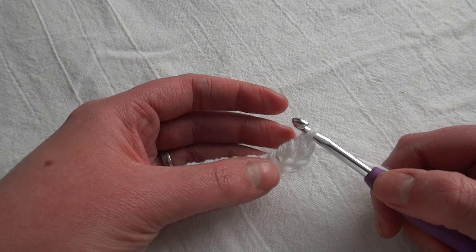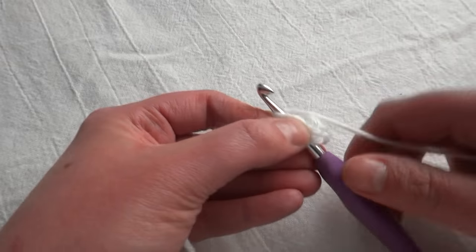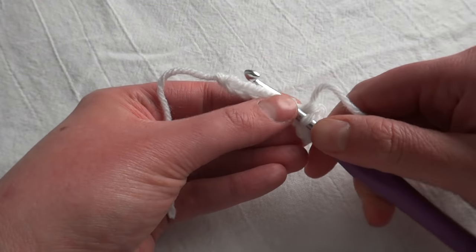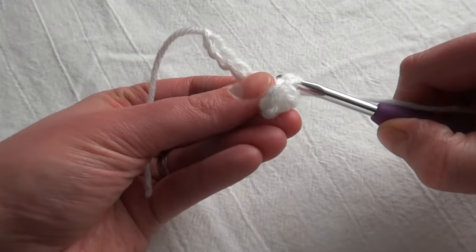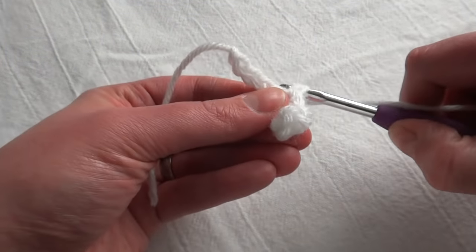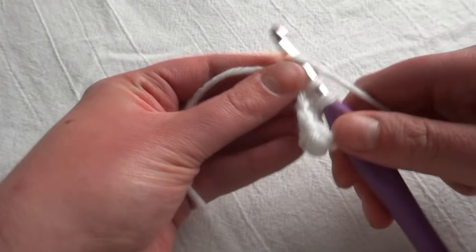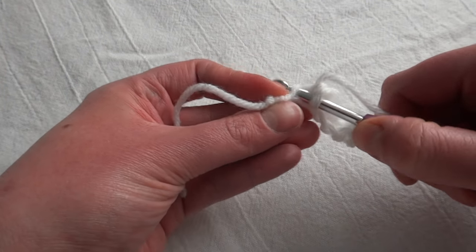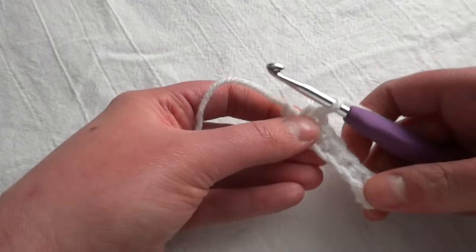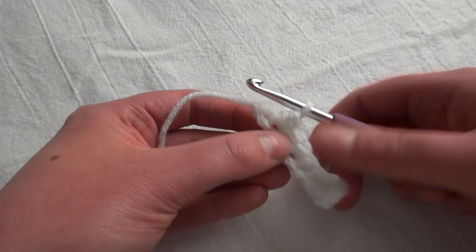And then we're going to do five single crochets. We'll just do one in each chain. So you'll know that you have one chain left. We're going to do four single crochets into that one final chain.